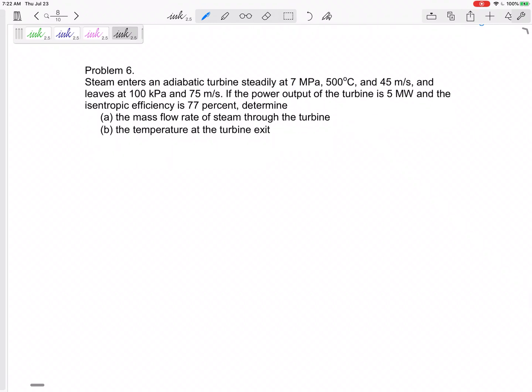Okay, let's look at this last problem for this review. Steam enters an adiabatic turbine steadily at 7 MPa, 500 degrees C, 45 meters per second. It leaves at 100 kPa, 75 meters per second. The power output of the turbine is 5 megawatts and the isentropic efficiency is 77 percent. Determine the mass flow rate and the temperature at the turbine exit.